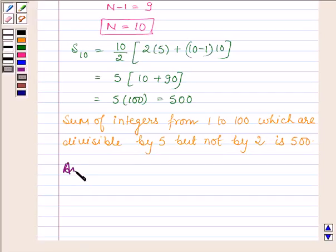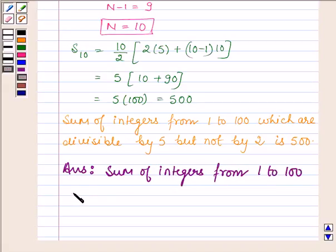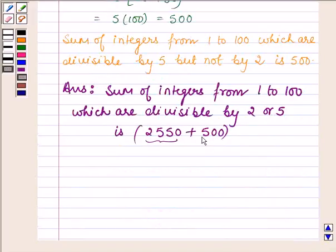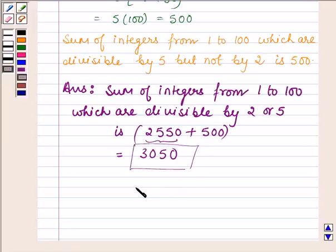And therefore our answer is: the sum of integers from 1 to 100 which are divisible by 2 or 5 is 2550 + 500. Here 2550 is the sum of integers divisible by 2, and 500 is the sum of integers divisible by 5 but not by 2, between 1 and 100. So this is equal to 3050, which is the sum of integers divisible by 2 or 5 from 1 to 100. This completes the solution — take care and have a good day.